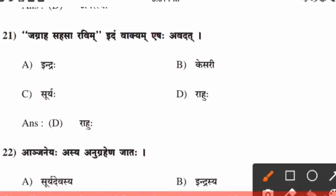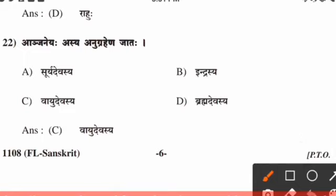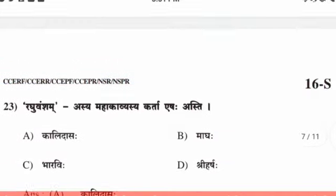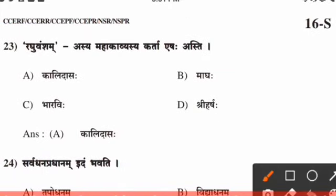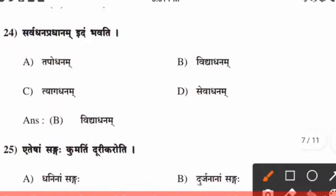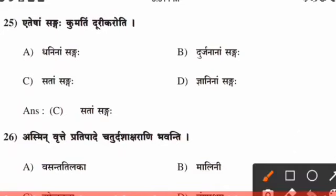Twenty-first question, the right answer is option D. Twenty-second question, the right answer is option C. Twenty-third question, the right answer is option A. Twenty-fourth question, the right answer is option B. Twenty-fifth question, the right answer is option C.